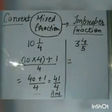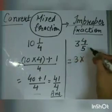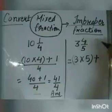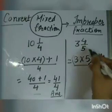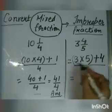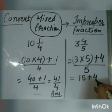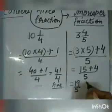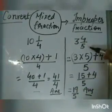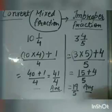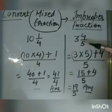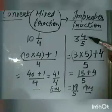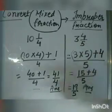Similarly, you can try to solve this one. The whole part is multiplied with the denominator: 3 multiplied by 5, and then add the numerator 4, upon 5 as it is. So 3 times 5 is 15, plus 4 upon 5 gives 19 upon 5. So the mixed fraction 3 and 4 upon 5 is converted into the improper fraction 19 upon 5. The whole part is multiplied with the denominator and then the numerator is added; the denominator stays as it is.